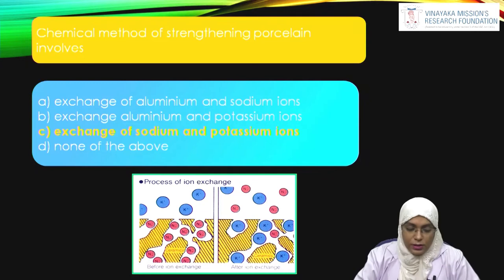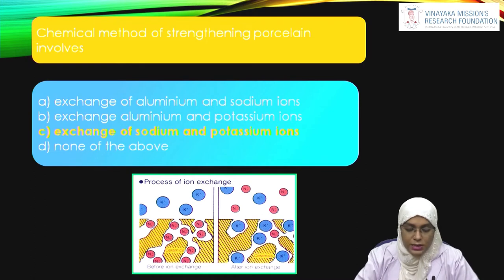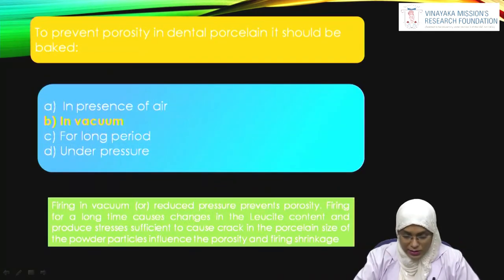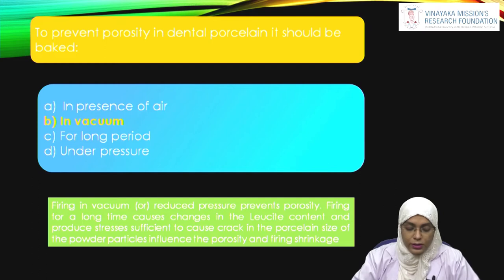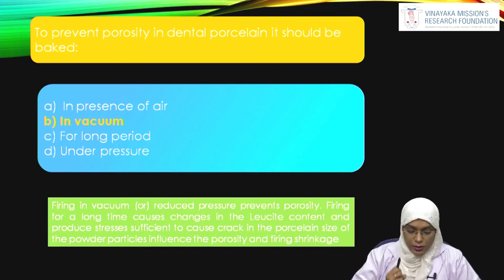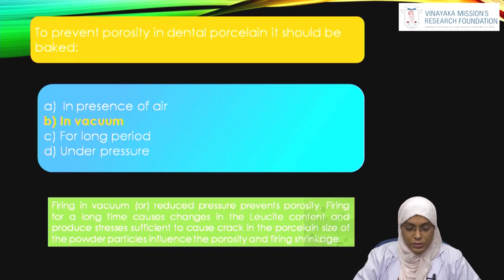Chemical method of strengthening porcelain involves exchange of — aluminium and sodium ions, aluminium and potassium ions, sodium and potassium ions, or none of the above? The answer is exchange of sodium and potassium ions, because glass contains sodium ions and not aluminium ions. To prevent porosity in dental porcelain, it should be baked in vacuum, because firing under reduced pressure prevents or reduces porosities. Firing for a longer time can change the leucite content and introduce cracks in the ceramics.